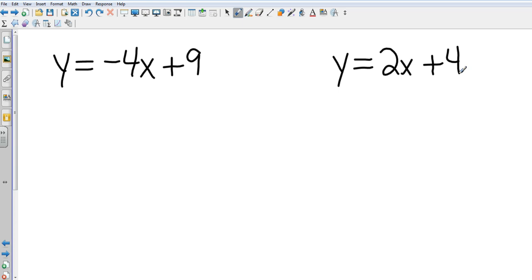Okay, we're back. My slope is the number in front of the x, which in this case is negative 4. My y-intercept is positive 9. Over on the second problem, my slope is 2. My y-intercept is 4.